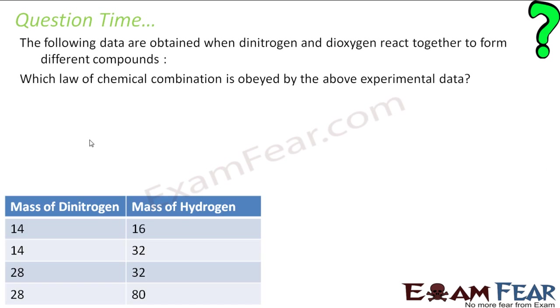So now let's take some questions. The data are given when dinitrogen and oxygen react to form different compounds. The question says, which law of chemical combination is obeyed here? So if you see here, 14 grams react with 16 grams, 14 with 32, 28 with 32, 28 with 80.